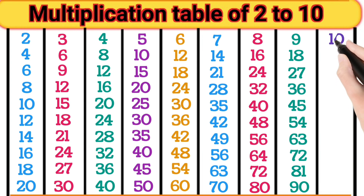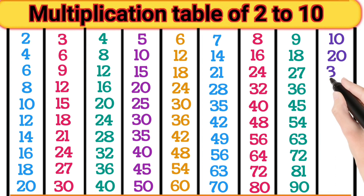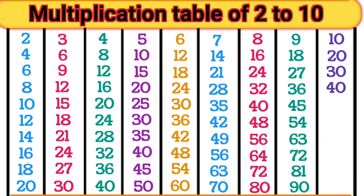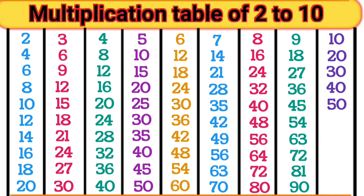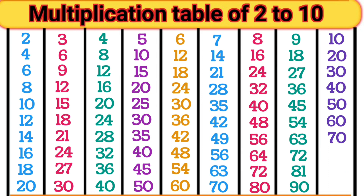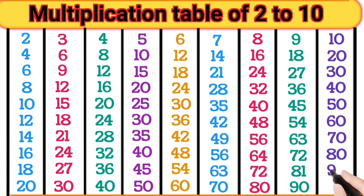10 1s are 10. 10 2s are 20. 10 3s are 30. 10 4s are 40. 10 5s are 50. 10 6s are 60. 10 7s are 70. 10 8s are 80. 10 9s are 90. 10 10s are 100.